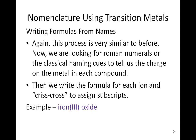For example, we've got iron 3 oxide. Remember, that 3 does not mean that you have 3 irons — it means that you have Fe3+. Oxygen is always O2-. So these two ions combine to form Fe2O3, otherwise known as rust.